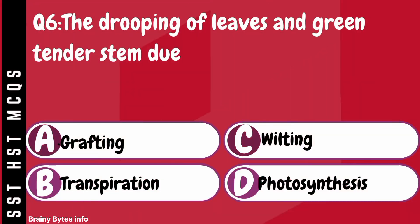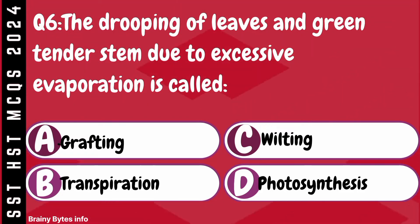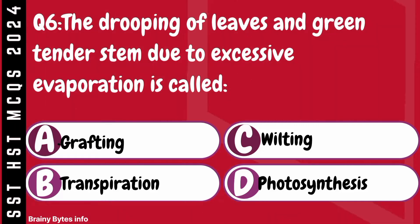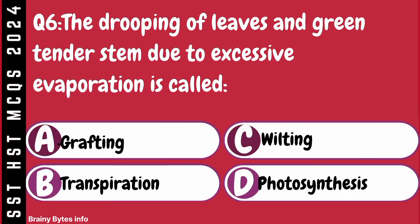Question 6. The drooping of leaves and green tender stem due to excessive evaporation is called. A. Grafting. B. Transpiration. C. Wilting. D. Photosynthesis.